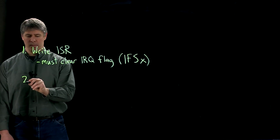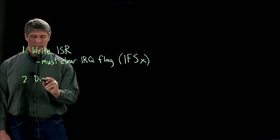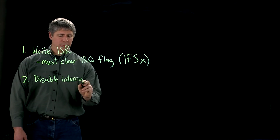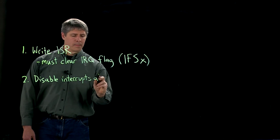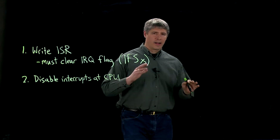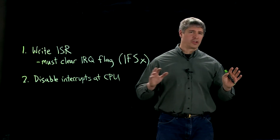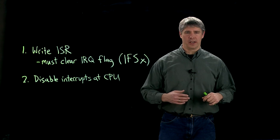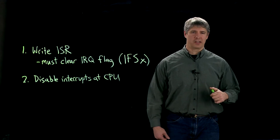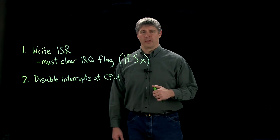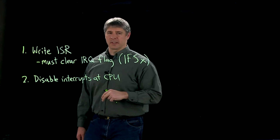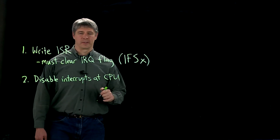The next thing you have to do is disable the interrupts at your CPU. This says to the CPU: don't accept any interrupt requests until I enable you again. This allows you to set or configure your interrupt requests and ISR without danger of accidentally triggering an interrupt while that's happening. So you're going to tell the CPU don't process any interrupts until further notice.